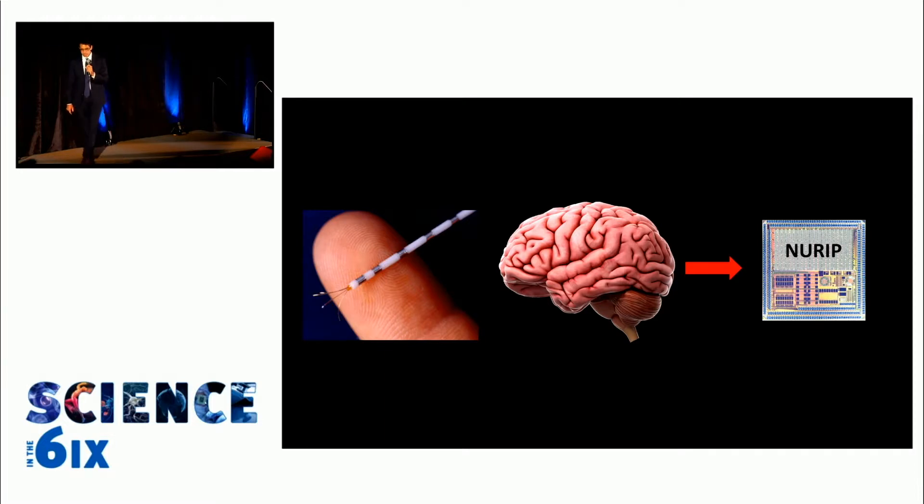It's not easy to understand where seizures are coming from within the brain, and it's even more difficult to understand when they're going to happen. So Neurope listens to brain signals from these implanted electrodes, often hundreds within the brain.